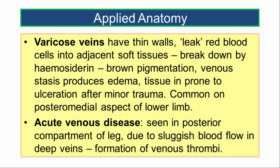Varicose veins have thin walls. There is leakage of red blood cells into adjacent soft tissues, and breakdown of hemosiderin giving rise to brown pigmentation. Persistent venous stasis produces edema or increased tissue fluid, and such tissues are prone to ulceration following minor trauma. It is commonly seen on the posteromedial aspect of the lower limb — as was seen in our case scenario.